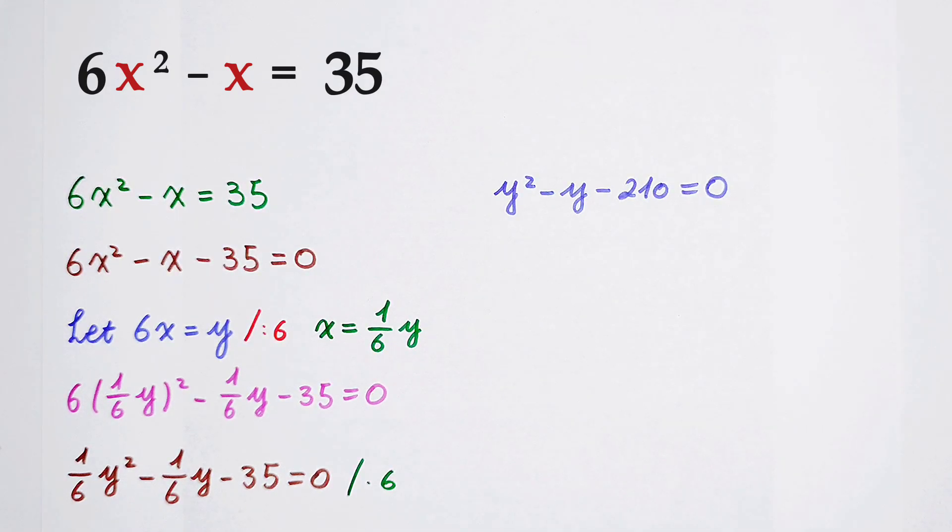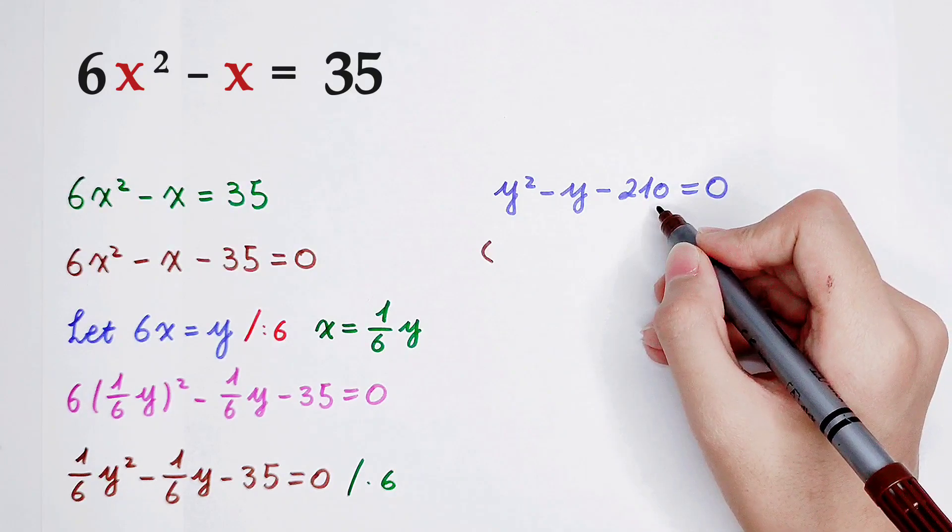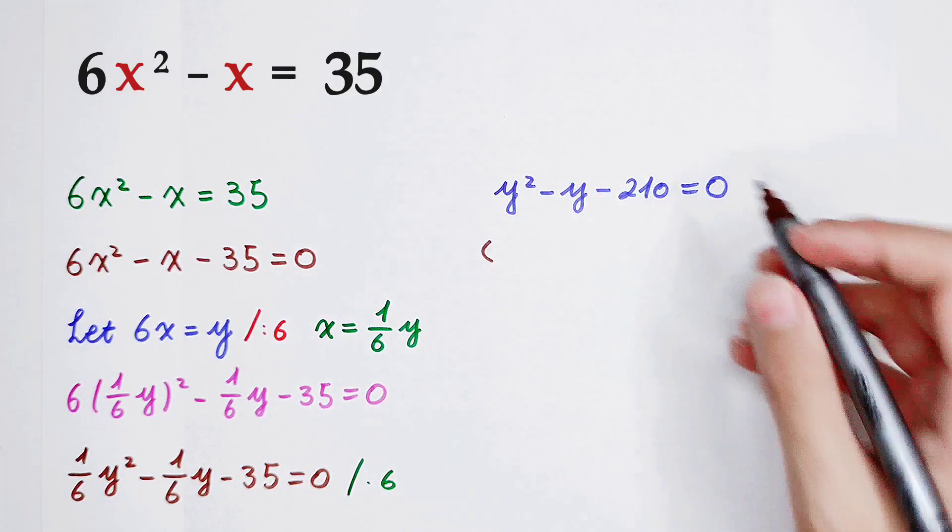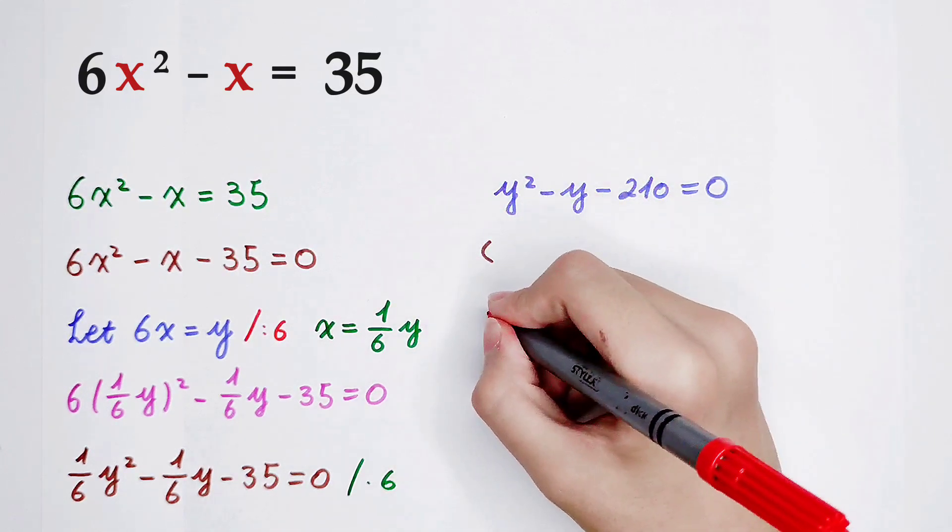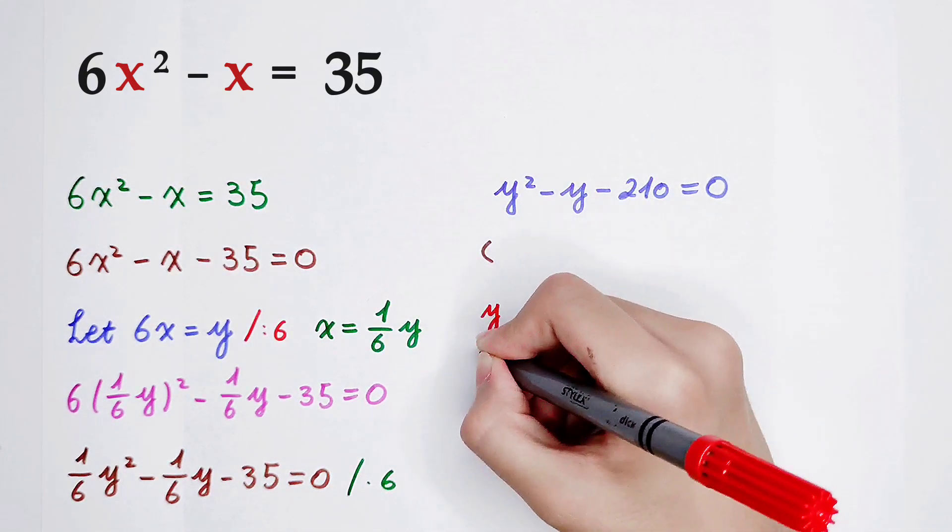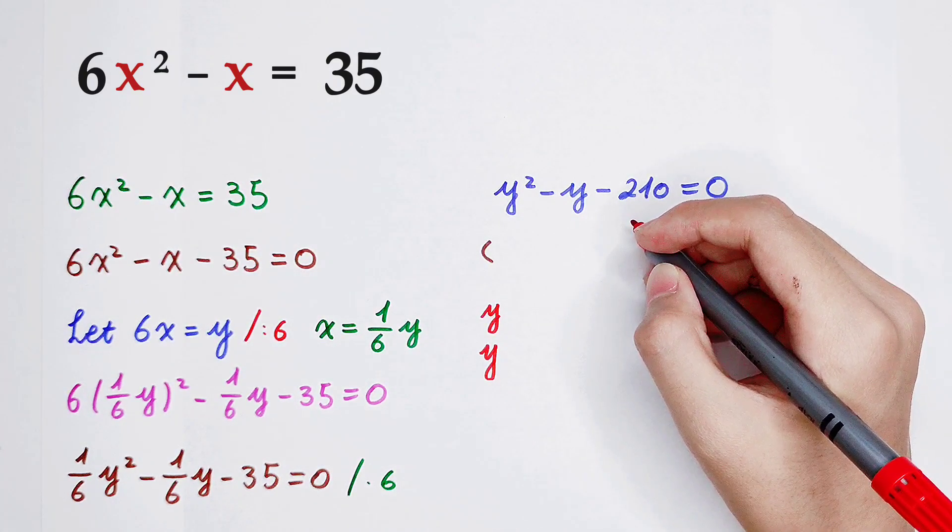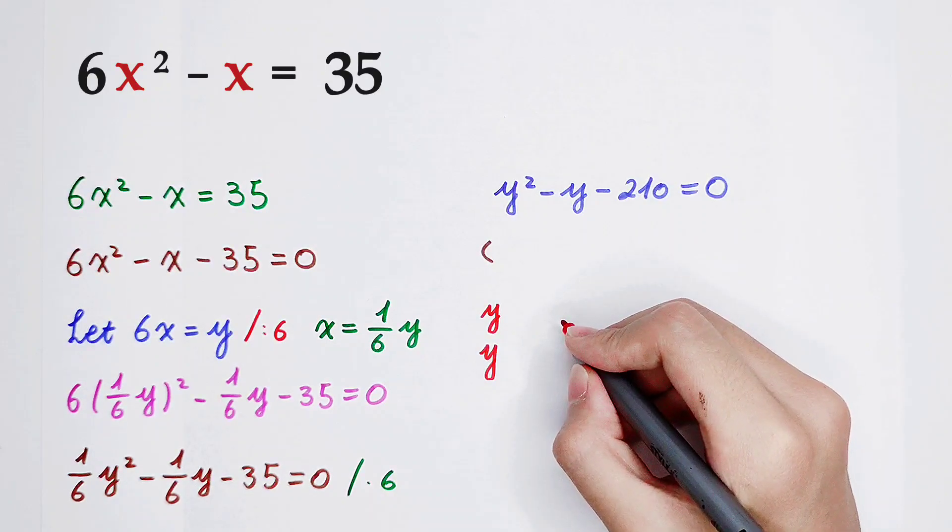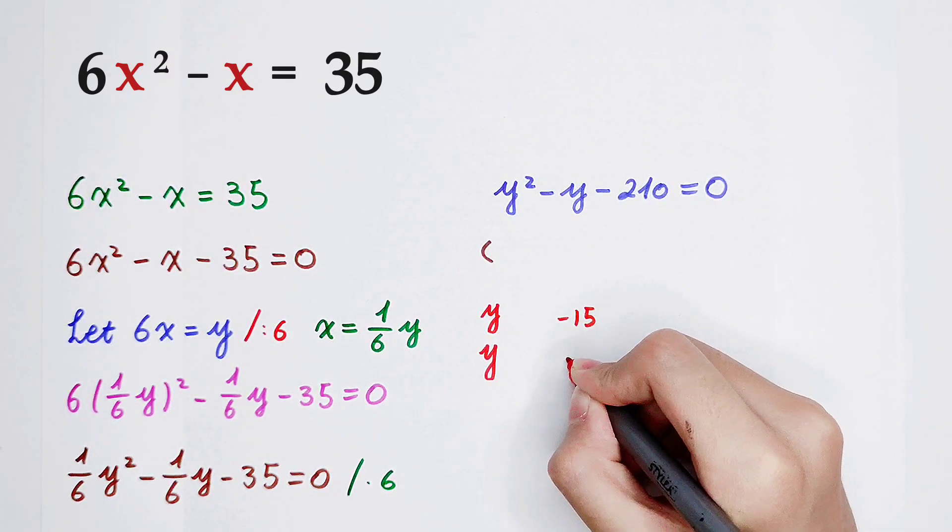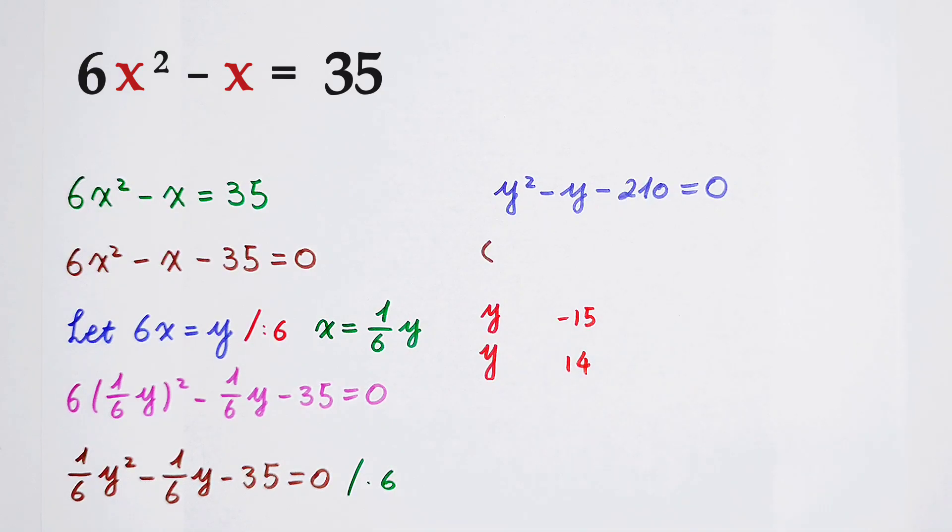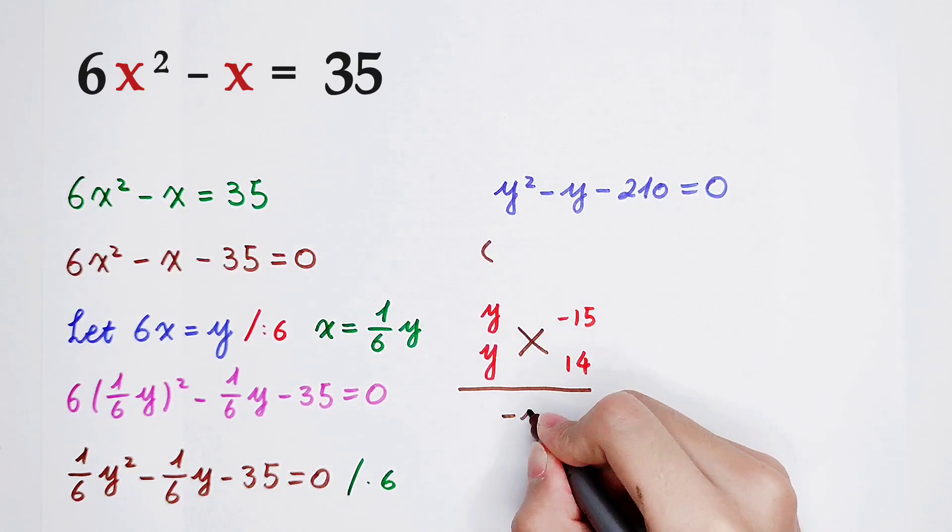How can I do it? Now, we can factor it. How can I factor it? Find the factors of this equation. y squared can be written as y times y, and minus 210 can be minus 15 times 14. In this way, 14y minus 15y is negative y, so here is negative y. It is correct.